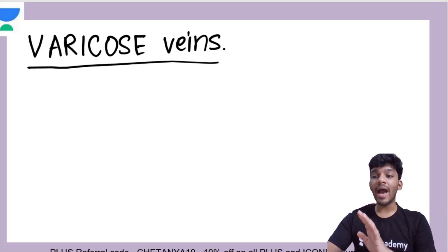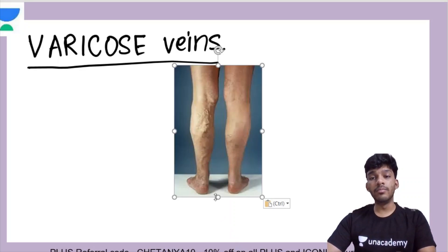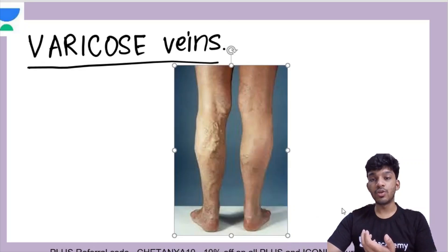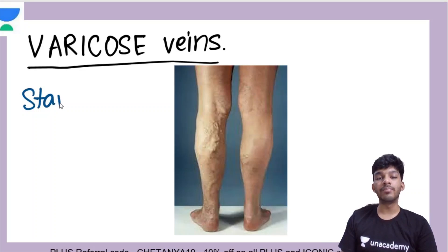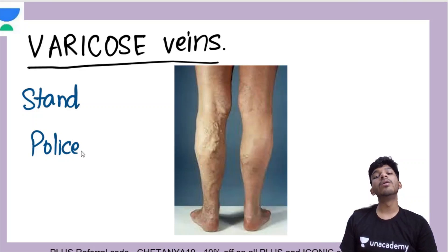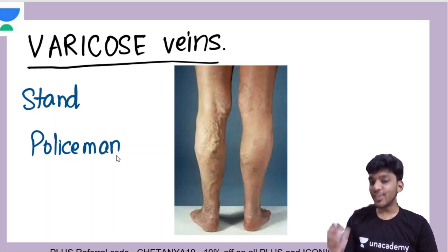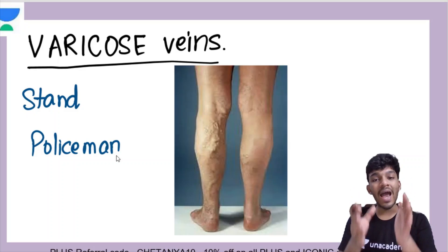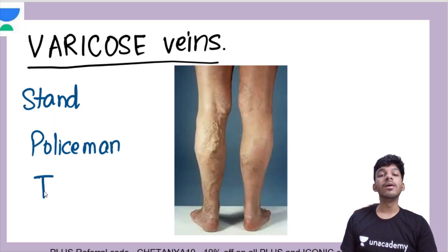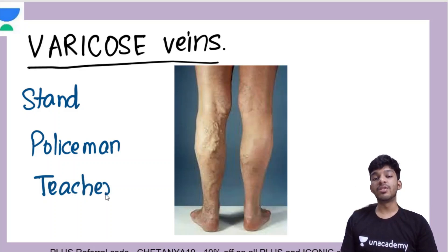Varicose veins have a very characteristic appearance. You can easily make out just by looking at the person that they have varicose veins. As you might be aware, this is more common in people who have to stand for a long period of time — for example, it's very common in policemen or teachers who walk around in universities and schools and have to stand for long periods. So they may commonly be affected by this venous disorder.